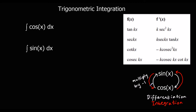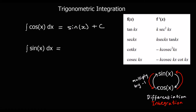So we've got the integral of cos x: cos x integrates to give sin x, so that equals sin x plus c. And sin x integrated gives negative cos x plus c. So that's our cos x and our sin x integrated.